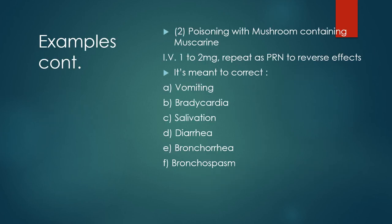Number two, poisoning with mushrooms containing muscarine: intravenously, we can give atropine at 1 to 2 mg and repeat as required to reverse the following effects — vomiting, bradycardia, salivation, diarrhea, bronchorrhea, and bronchospasm.